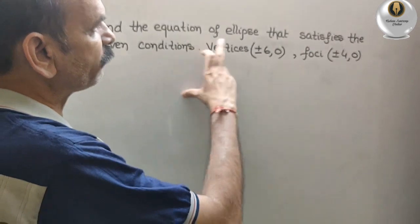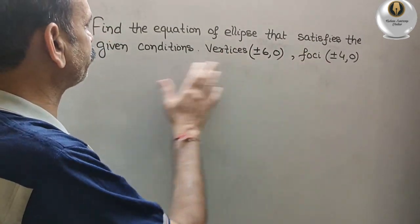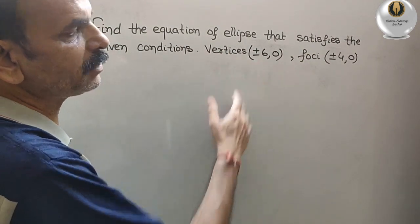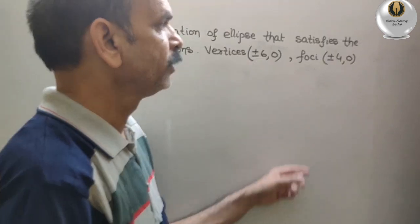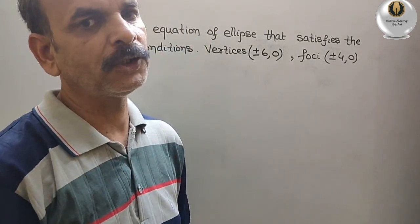Your question is, find the equation of ellipse that satisfies the given condition: vertices is plus minus 6 comma 0 and the foci is plus minus 4 comma 0.